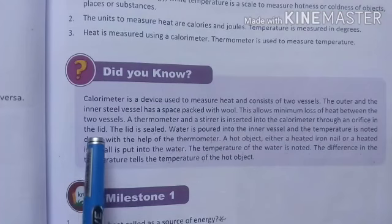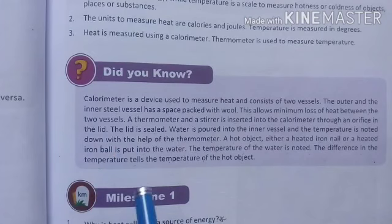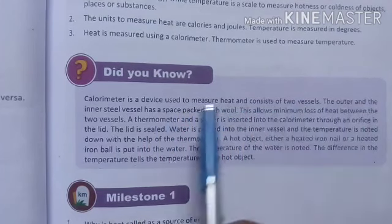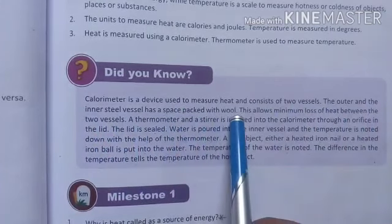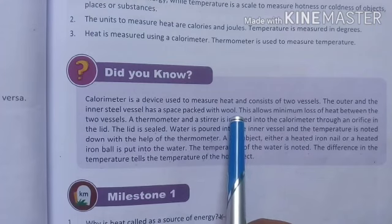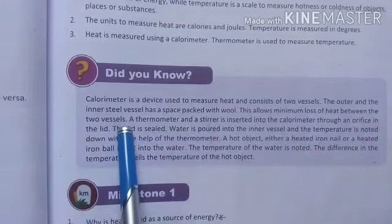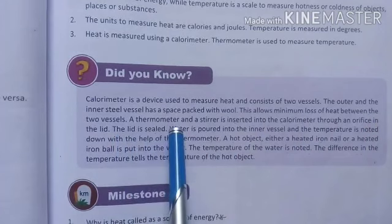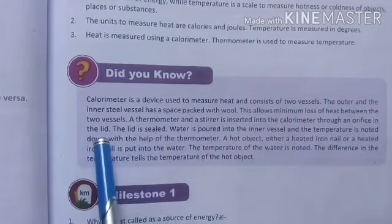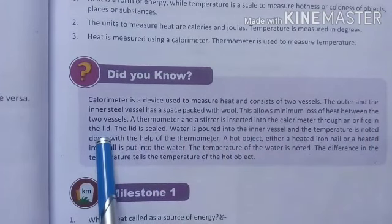Let's see what is given in the 'Did You Know' section — they are talking about the calorimeter. A calorimeter is a device used to measure heat and consists of two vessels — an outer and an inner steel vessel. The space between them is packed with wool or thermocol, which acts as an insulator, not allowing outside heat to come inside or inside coolness to escape. This allows minimum loss of heat between the two vessels. A thermometer and stirrer are inserted into the calorimeter through an orifice in the lid.